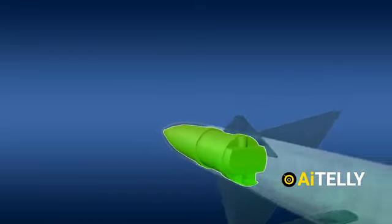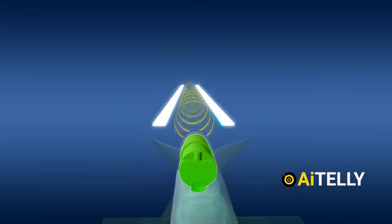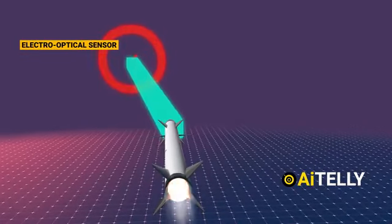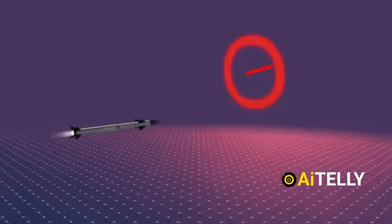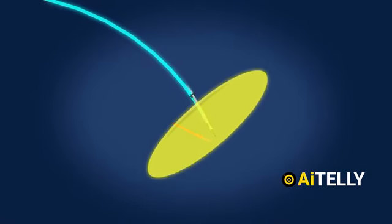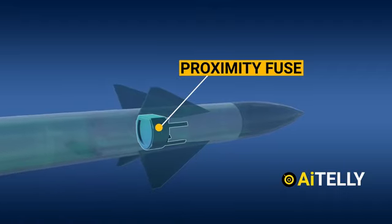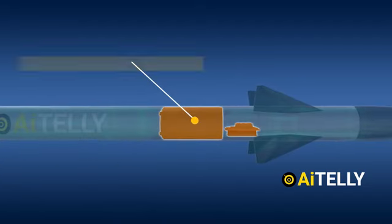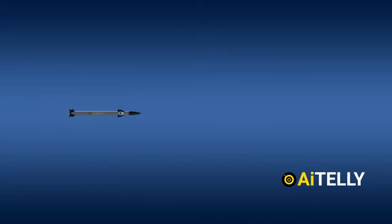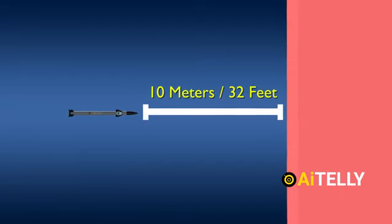The interceptor missile employs its electro-optical sensor to monitor and target the incoming rockets, striving to approach the threat as closely as possible. Upon achieving the designated target, the missile activates its advanced sensors and laser system. This activation initiates the proximity-fused warhead, preloaded with fragmentation rounds, which detonates within a range of just 8 to 10 meters from the target, thereby ensuring maximum damage upon impact.